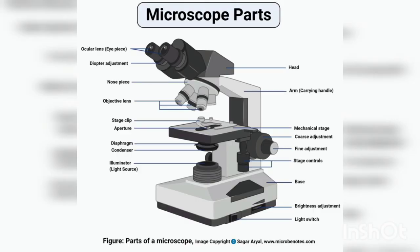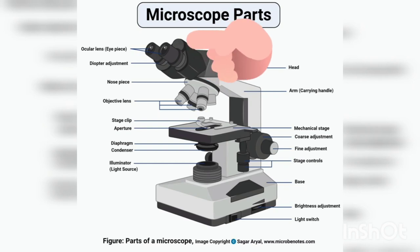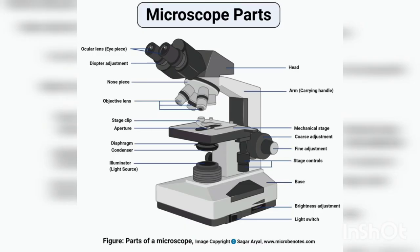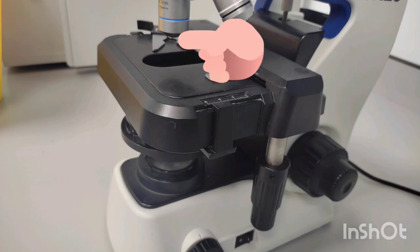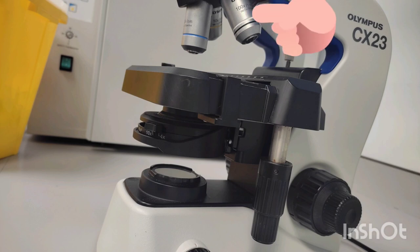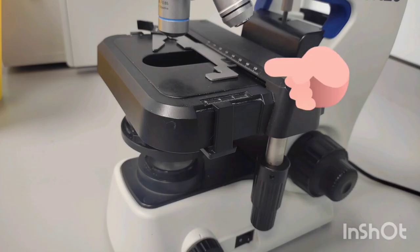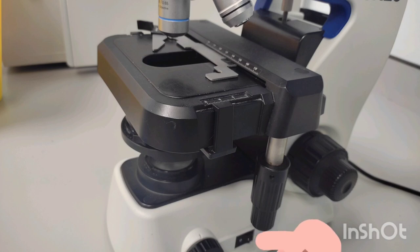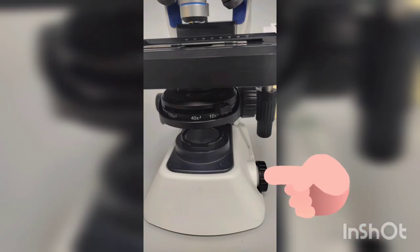Here we are discussing the parts of the microscope. As you can see in the picture, this is a compound microscope. On the top you have the head. This part is called the head, and here you have two eyepieces — the ocular lens. Some microscopes have only one eyepiece, some have two. Next you can see the diopter adjustment, the nosepiece, the objective lenses, the stage clip, the mechanical stage, the condenser, the illuminator, and the light switch where you can turn the light on and off. This is your base.